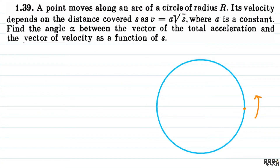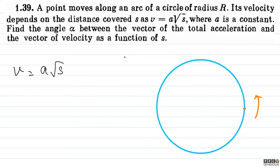So basically, this question involves motion along an arc of a circle of radius R. It says that velocity here means speed. So its speed, the distance covered s, depends as v = a√s, where a is a constant.